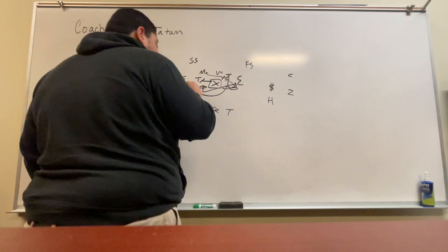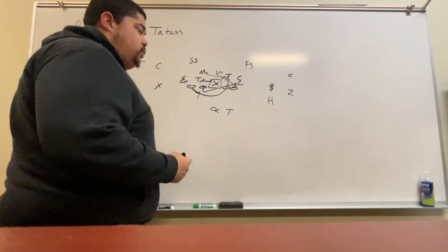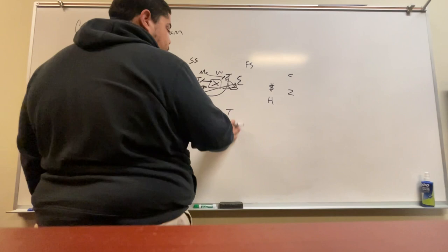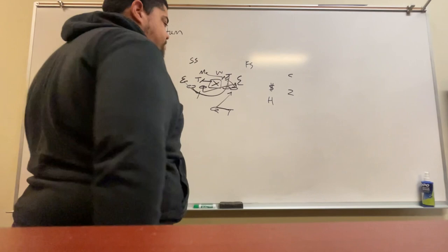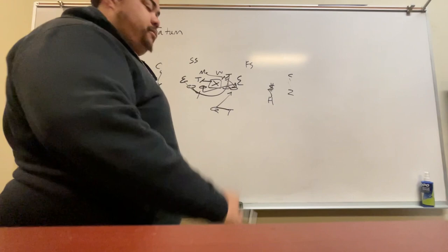And this tight end is basically going to just replace and block this end. We like to do a lot of same side run with the back, especially on counter. So he will step, open step, cross over and come back downhill following the tackle and getting in his hip pocket and making a cut. Outside, we're going to stalk blocking. GT counter, nothing crazy, right?